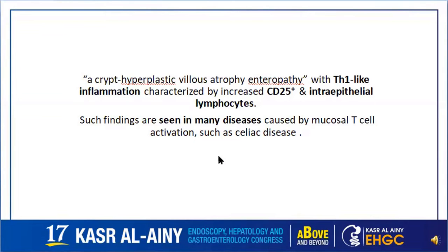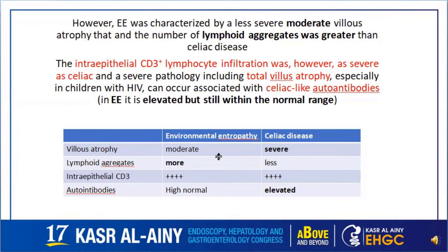This pattern is seen in many diseases characterized by mucosal T cell activation, such as celiac disease. To highlight the main differences: environmental entropathy generally shows a less severe or moderate form of villus atrophy with more lymphoid aggregate formation. However, in severe forms such as children with HIV, environmental entropathy can show celiac-like total villus atrophy with increased CD3-positive intraepithelial lymphocytes and even celiac-like autoantibodies.